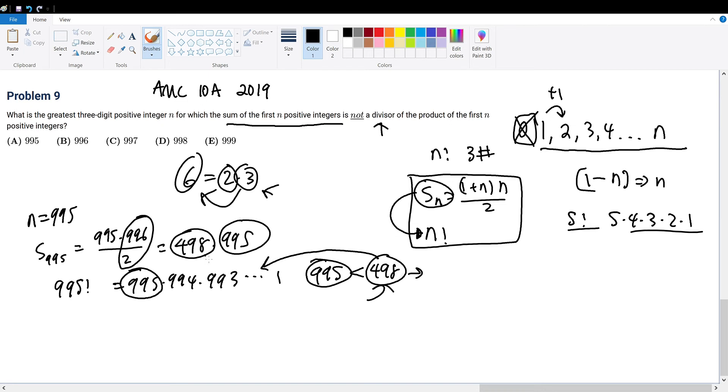498 is within this series. Therefore, 498 can be multiplied with 995 along with other factors to result in 995 factorial. Meaning 498 and 995 are necessary components to compose 995 factorial. Meaning they are indeed divisors of 995 factorial. Therefore, we're trying to find numbers that are not a divisor. And since the summation of 995 all the way down to 1 is a divisor of 995 factorial, answer choice A would not be a solution.